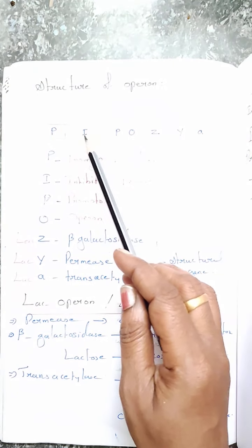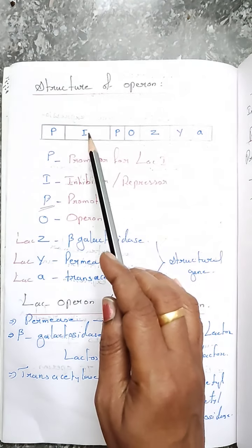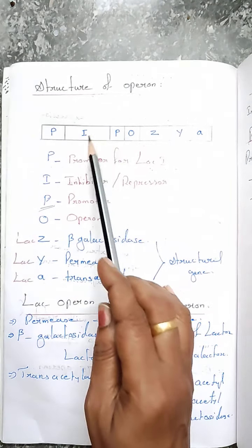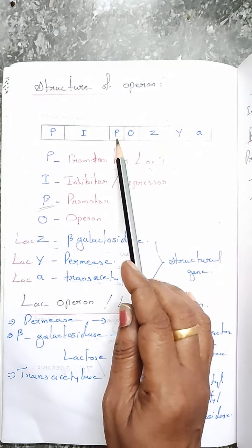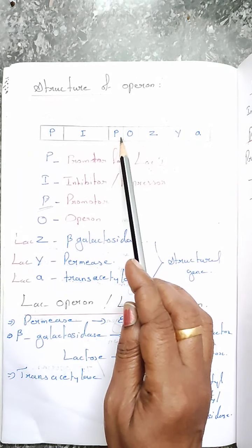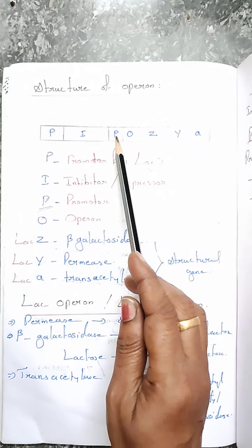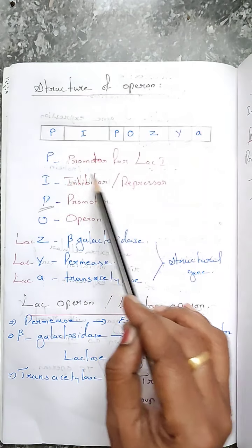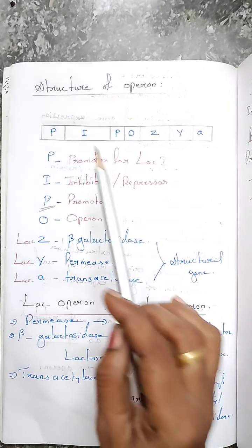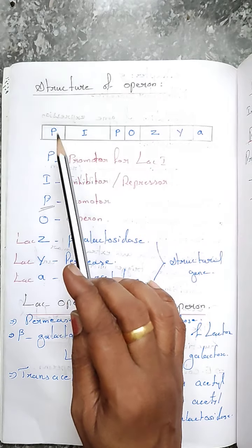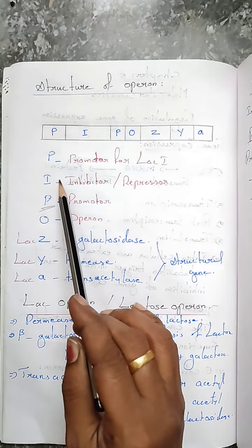Before the I region, there is another P that denotes the promoter for I — the promoter for the inhibitor. So the regions of the operon are: P (promoter), O (operator), and structural genes Z, Y, A. Before P there is I — the inhibitor or repressor — and before I there is a promoter for I.